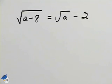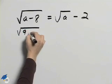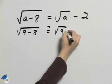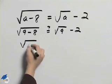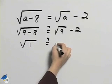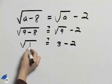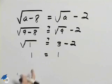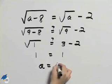We found that a was equal to 9, but we need to determine if that is an extraneous solution or not. So we'll substitute 9 for a and we'll see if the left-hand side is equal to the right-hand side of the equation. On the left-hand side we'll have the square root of 1. On the right-hand side we'll have 3 minus 2. The square root of 1 is 1, and 3 minus 2 is 1. So because this is a true statement, we know that a is equal to 9.